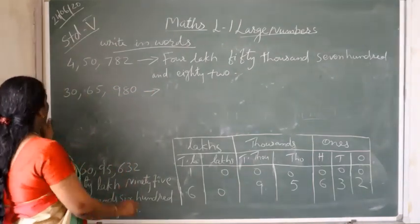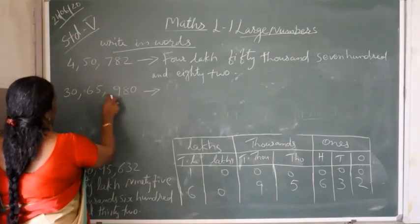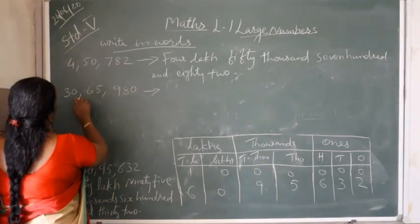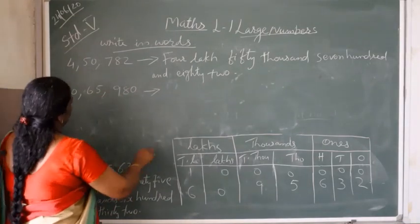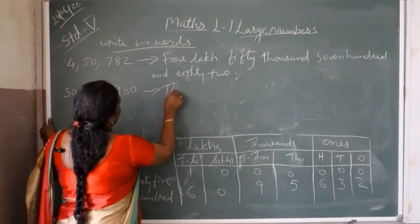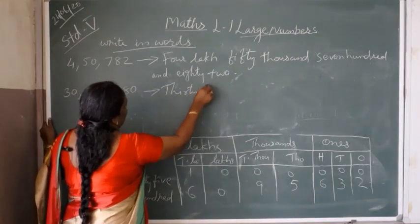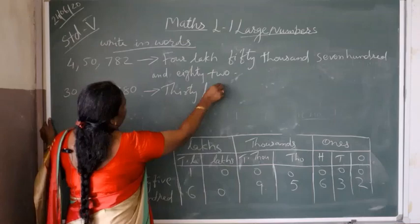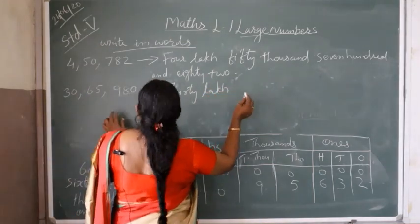Next one. Ones, tens, hundreds, thousands, ten-thousands, lakhs, and ten-lakhs. We can write this number as thirty lakhs.